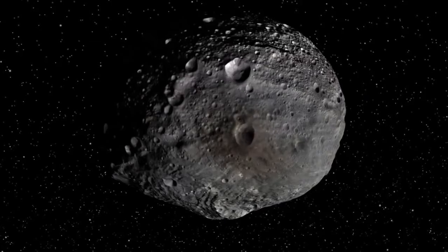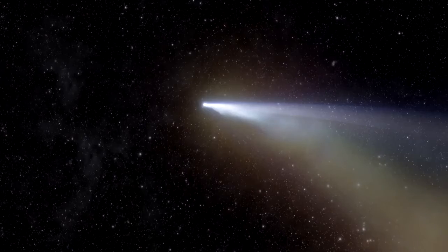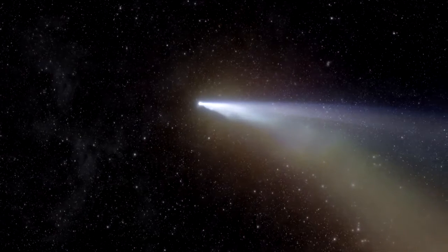For a long time, the traditional definition of an asteroid and a comet is that an asteroid is a rocky body and the comet is an icy body that shows activity—a coma, jets, a halo, those types of things that we associate with comets.